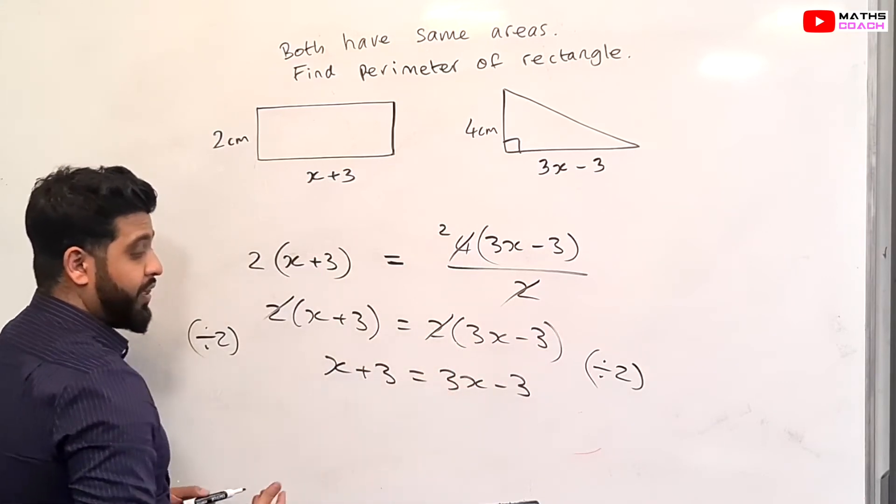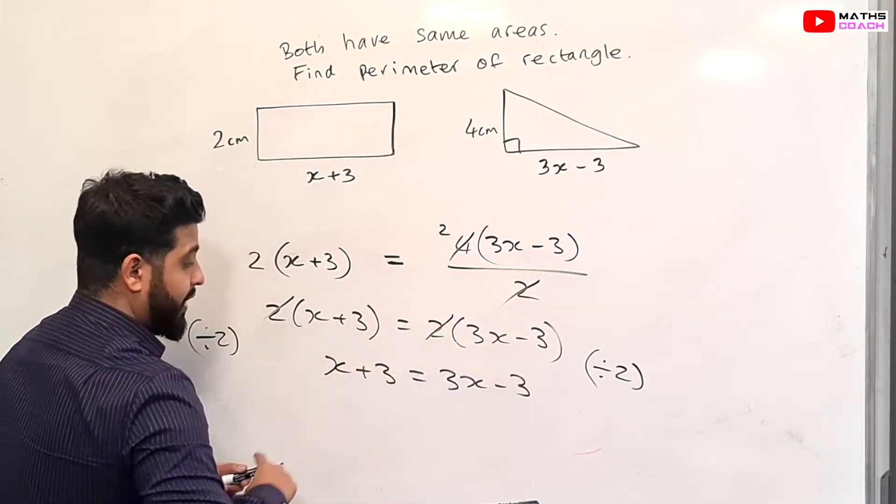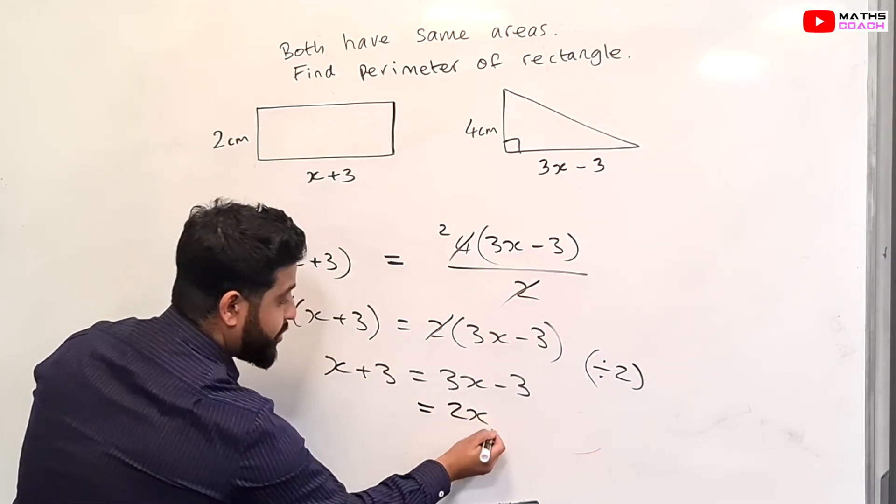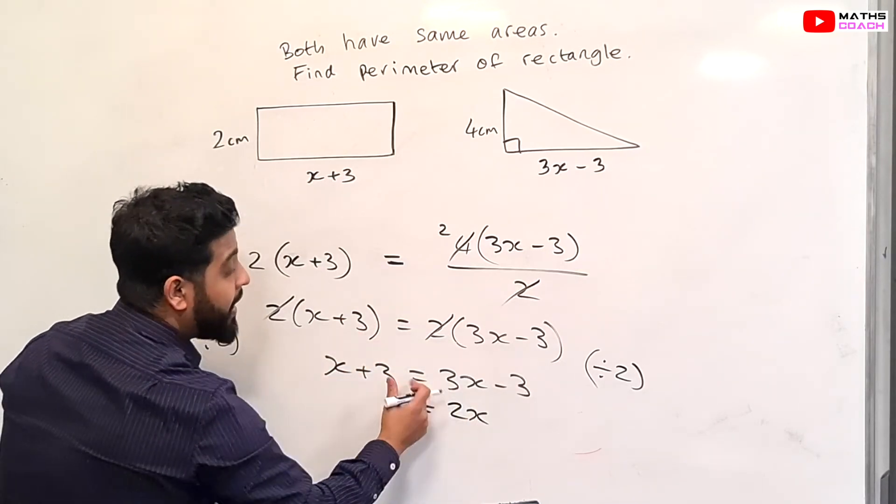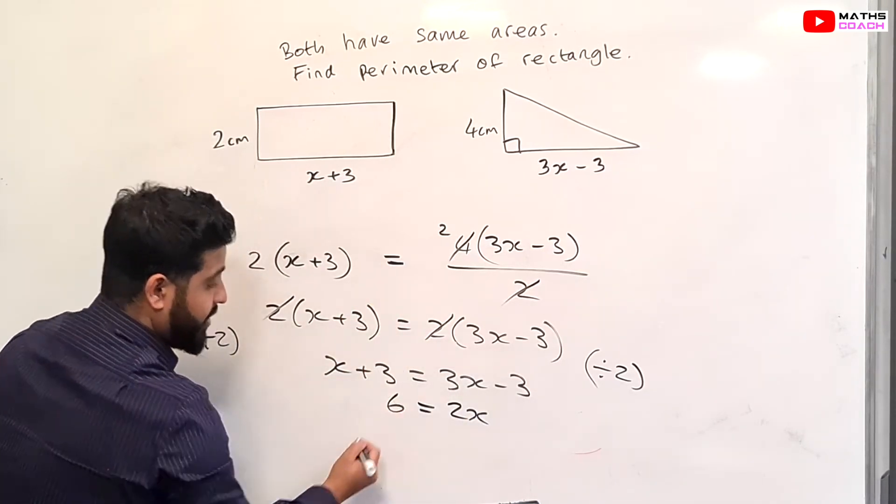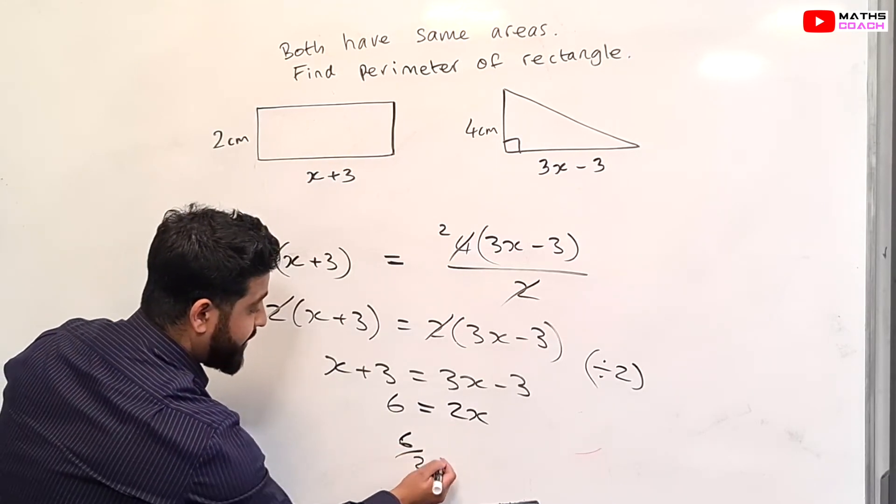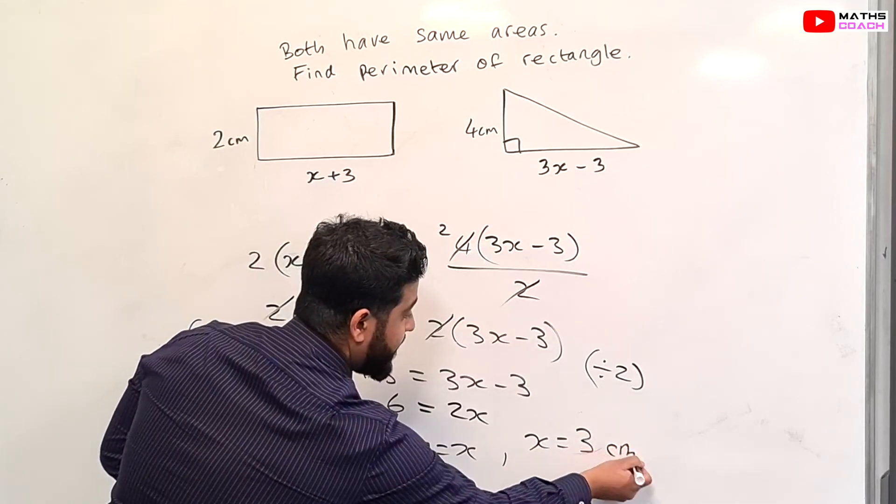Then we move the like terms over to one side. 3X take away X gives us 2X. The minus 3 on the other side will be positive, so it's 3 plus 3, which is 6. Therefore, 6 divided by 2 equals X. So X equals 3 centimeters.